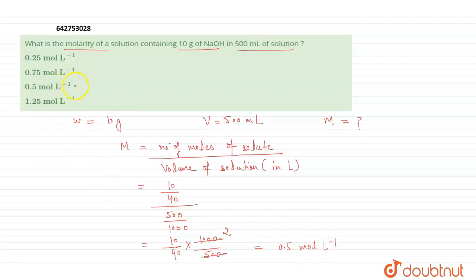So the molarity is 0.5 mol per liter. Option C is the correct answer.